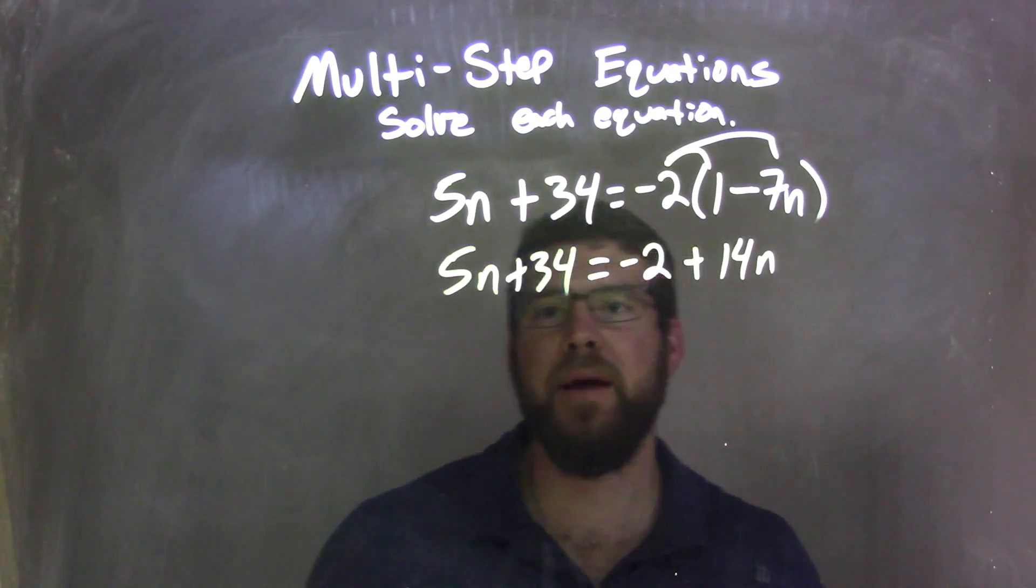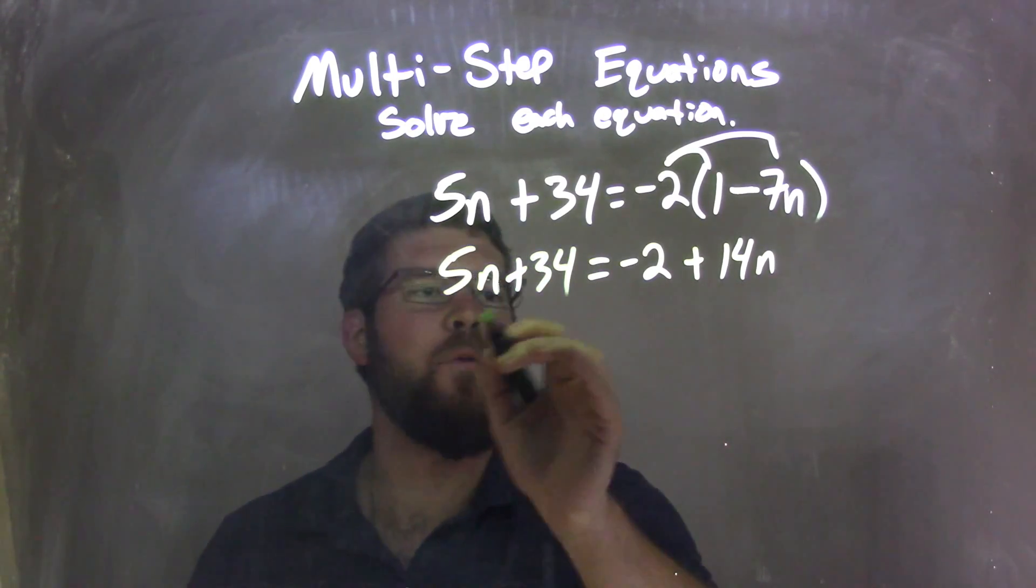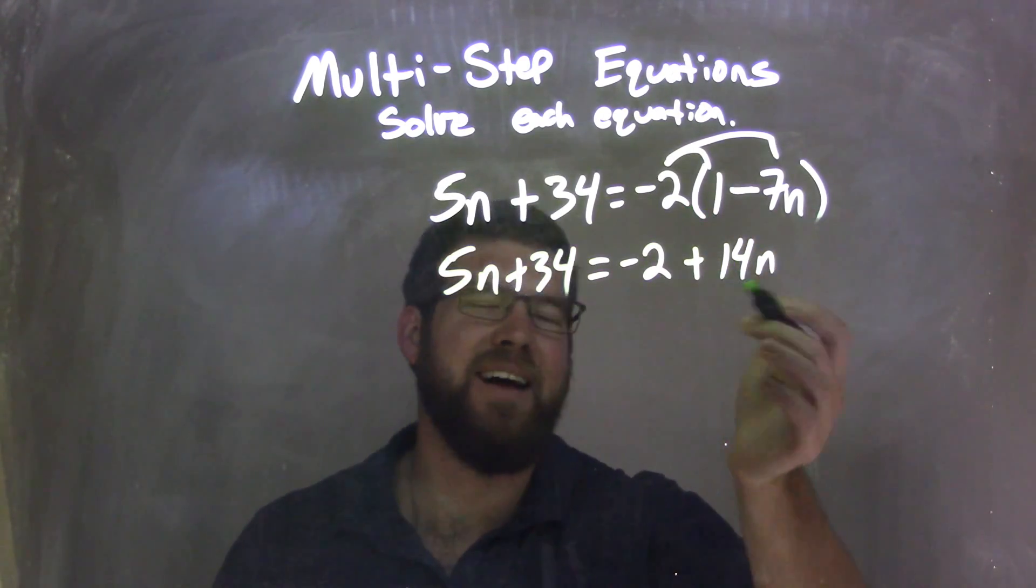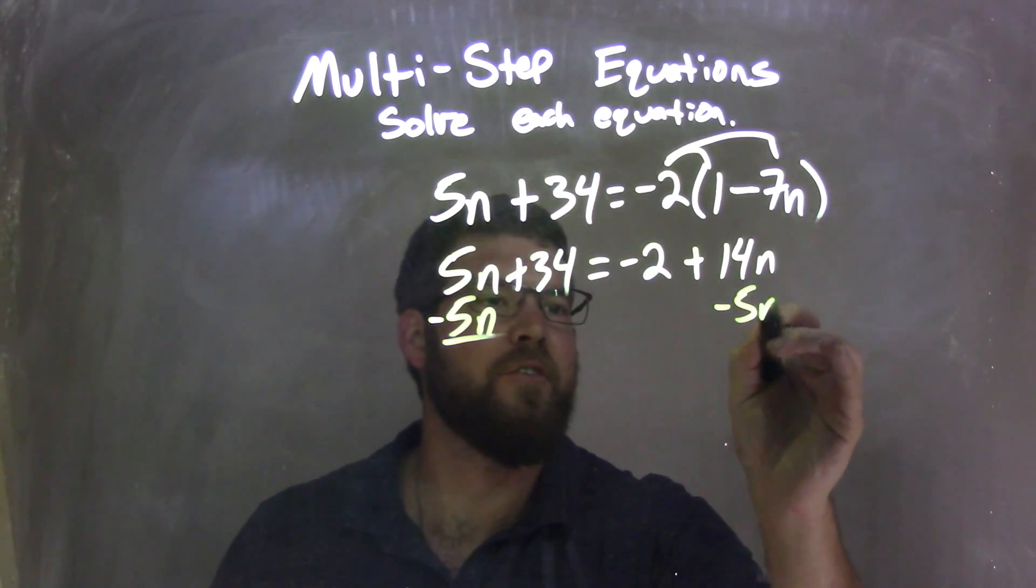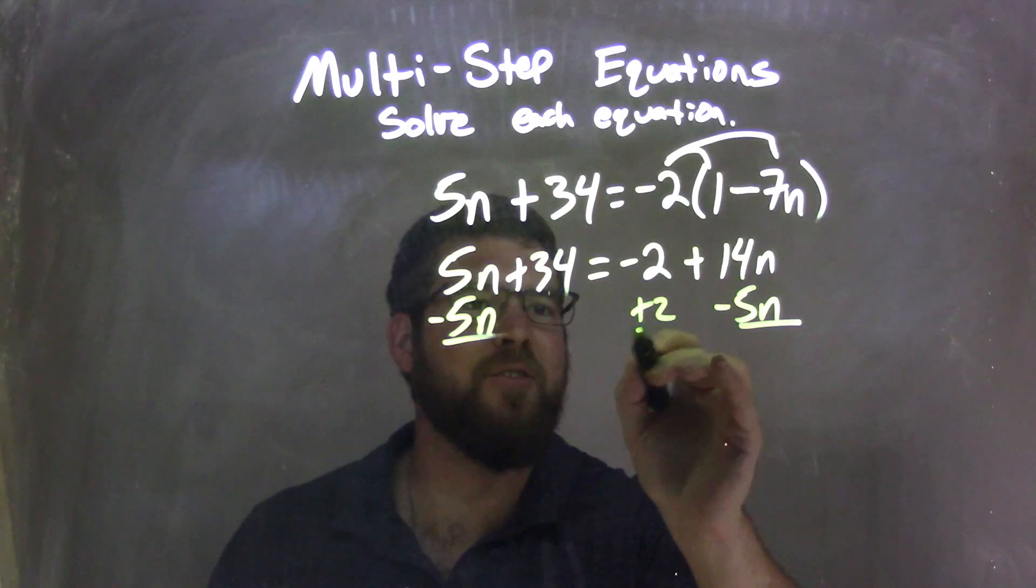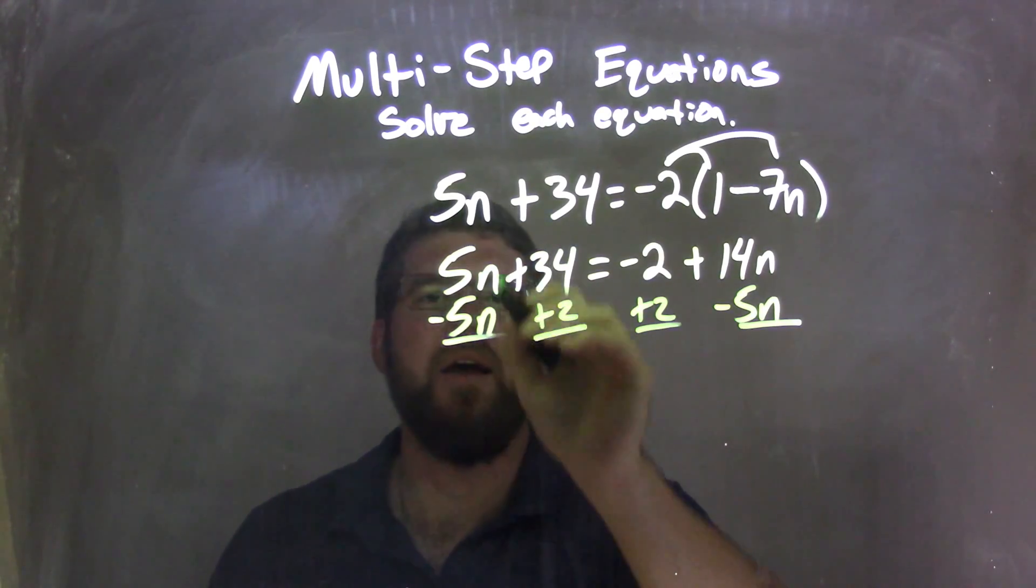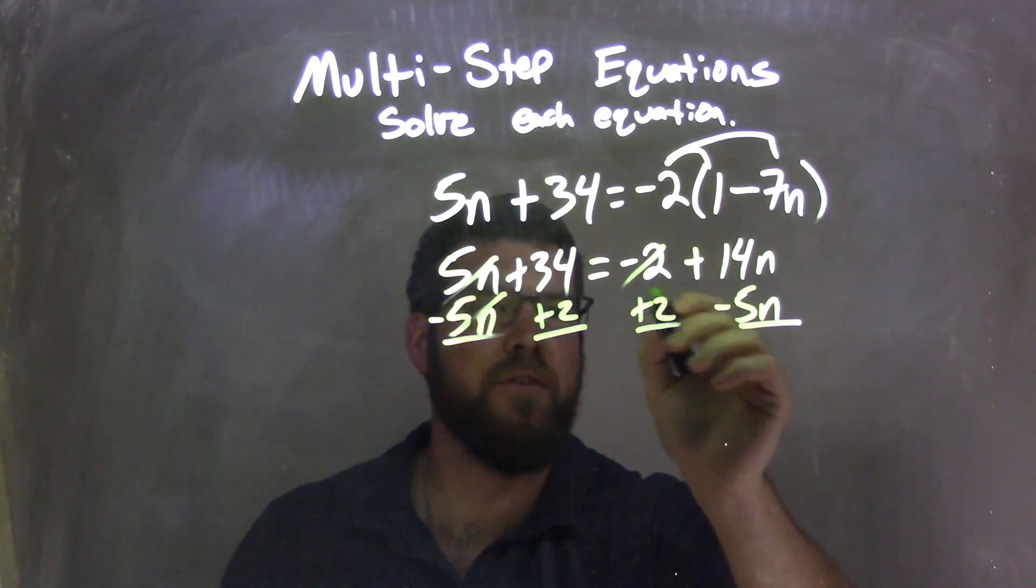So, now I can combine my like terms. I'm going to bring my n's to the right and my numbers to the left because I have to keep everything positive. I subtract 5n to both sides. That's just my preference. I'm going to add a 2 to both sides here. The n's cancel there. These 2's will cancel.